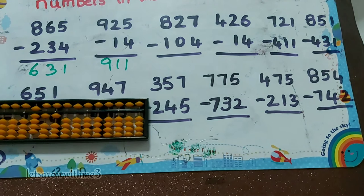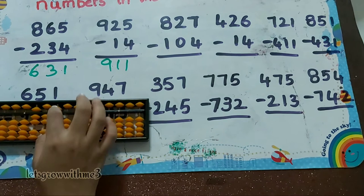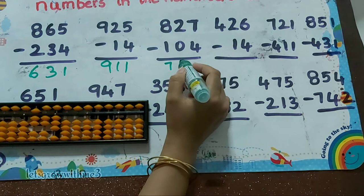Next one, 827 minus 104: minus 1, 0, minus 4. How to do minus 4? Minus 5 plus 1. So the answer is 723.